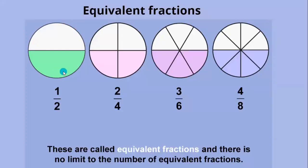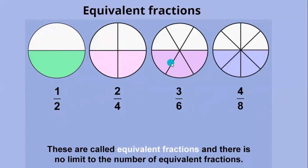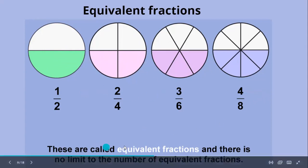Equivalent fractions — look at this diagram and the colored parts. All the colored parts look the same, but the fractions differ. The value is the same but the fraction is not: 1/2, 2/4, 3/6, and 4/8. Totally 8 parts with 4 colored, 6 parts with 3 colored, 4 parts with 2 colored, and 2 parts with 1 colored. The values are the same but the fractions differ — these are called equivalent fractions.